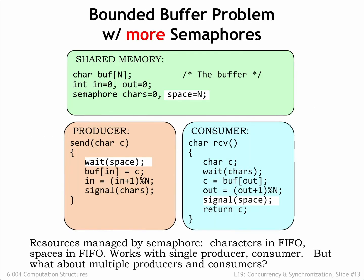Here we've added a second semaphore, "spaces", to manage the number of spaces in the buffer. Initially the buffer is empty, so it has N spaces. The producer must wait for a space to be available. When spaces is non-zero, the wait succeeds, decrementing the number of available spaces by 1, and then the producer fills that space with the next character. The consumer signals the availability of another space after it reads a character from the buffer. There's a nice symmetry here: the producer consumes spaces and produces characters, while the consumer consumes characters and produces spaces. Semaphores are used to track the availability of both resources — characters and spaces — synchronizing the execution of the producer and consumer. This works great when there's a single producer process and a single consumer process.